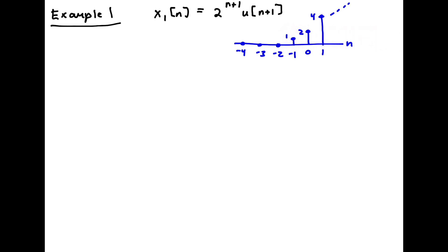This sequence is going up and increasing — it's 1 here and then 2 and then 4, etc. That's the quick sketch of the sequence, and now we're just going to write the definition of the transform and compute it.